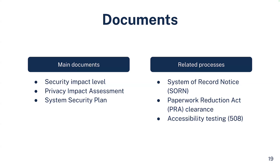There's a System of Records Notice, or SORN — if you have a brand new system that contains information on individuals and retrieves that information by personal identifier, you'll likely need a SORN. If your system is new or gathering new data and collecting information from the public, you will probably need PRA clearance. 508 is accessibility testing for any interfaces or documents that are produced.